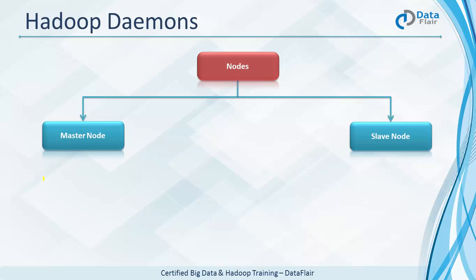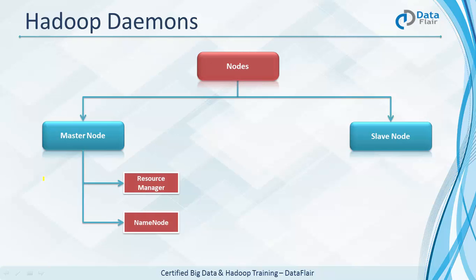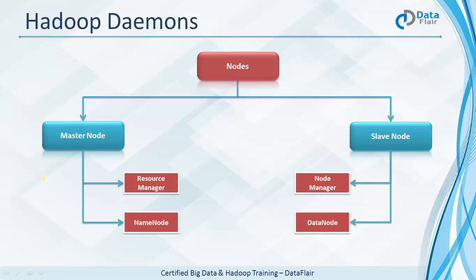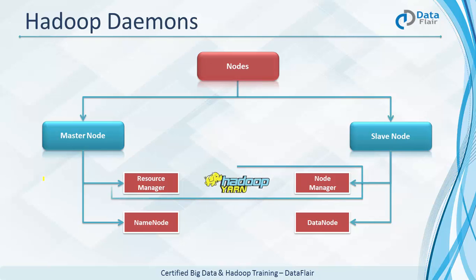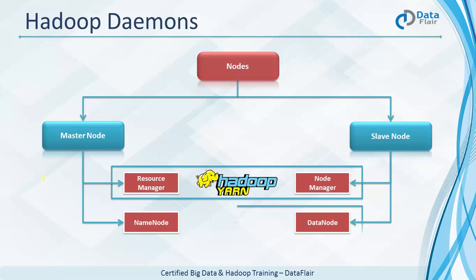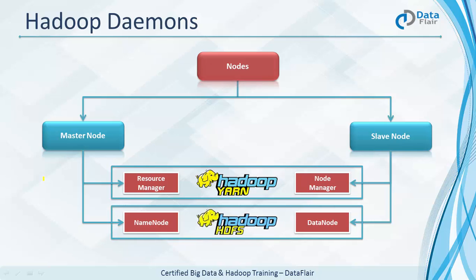Let's talk about Hadoop daemons — background processes that support the services. On the master node we have two daemons: Resource Manager and Name Node. On the slave node we have Node Manager and Data Node. Resource Manager and Node Manager run for YARN — Resource Manager is the master of YARN, Node Manager is the slave. Name Node and Data Node run for HDFS — Name Node is the master of HDFS, Data Node is the slave.